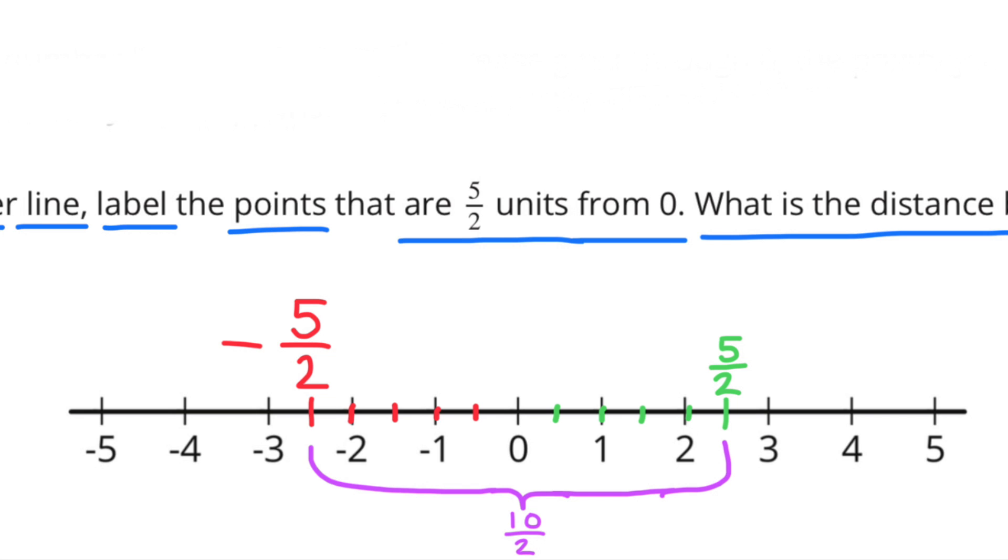To the right of the 0 at 5 halves I've labeled it 5 over 2 which represents 5 halves. Instead of placing a little line right there place a point. And then at 5 halves to the left of the 0 I have negative 5 halves.